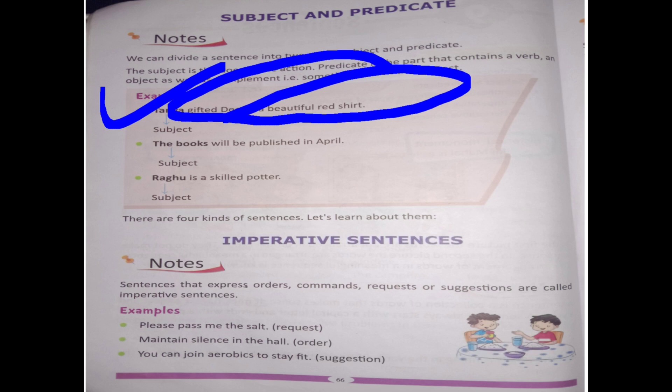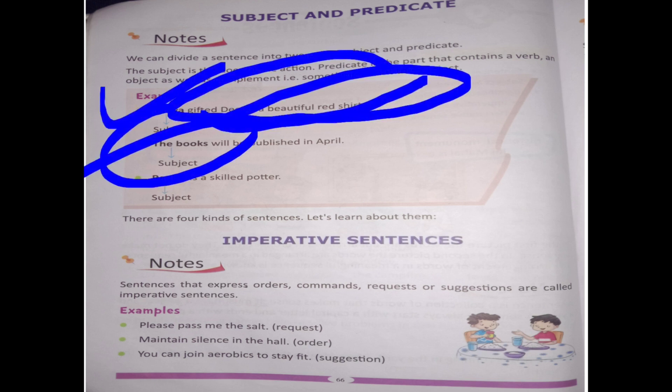Predicate is the part that contains a verb, an object, as well as complement. Tania ne kya gift kiya? A beautiful red shirt — this is the predicate. Another example: 'The books will be published in April.' The books is the subject, and 'will be published in April' is the predicate.